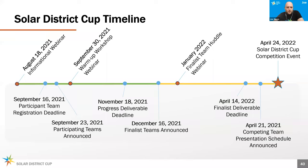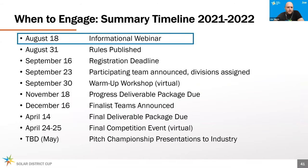We'll have a finalist team huddle webinar in January. You'll work throughout the spring semester and present in April. Industry judges will have you showcase your innovations, ask questions, receive feedback, and we'll identify first, second, and third place teams for each division. The final competition event will take place on Sunday, April 24th, with winners announced on Monday, April 25th. We're really excited about this balance of participation that allows you to connect with industry while engaging from your own universities and fitting within the academic calendar.